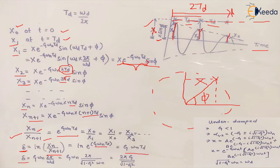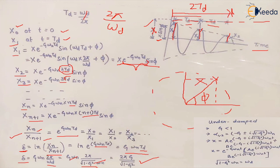So delta equals zeta·omega_n·TD. Substituting TD = 2π/omega_D, and omega_D = sqrt(1 - zeta²)·omega_n, the omega_n terms cancel out, giving the final equation: delta = 2π·zeta / sqrt(1 - zeta²). This equation gives the ratio of any two successive oscillations, which is constant regardless of which oscillation pair you choose.